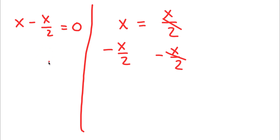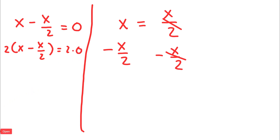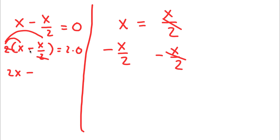Now, I'm going to multiply both sides by 2. So now I have 2 times (x minus x over 2) is equal to 2 times 0. To solve that, all I have to do is simply distribute the 2. So, 2 times x is 2x, and 2 times negative x over 2 — the 2 simply cancels out, so I'll simply be left with negative x. So I have 2x minus x is equal to 0.